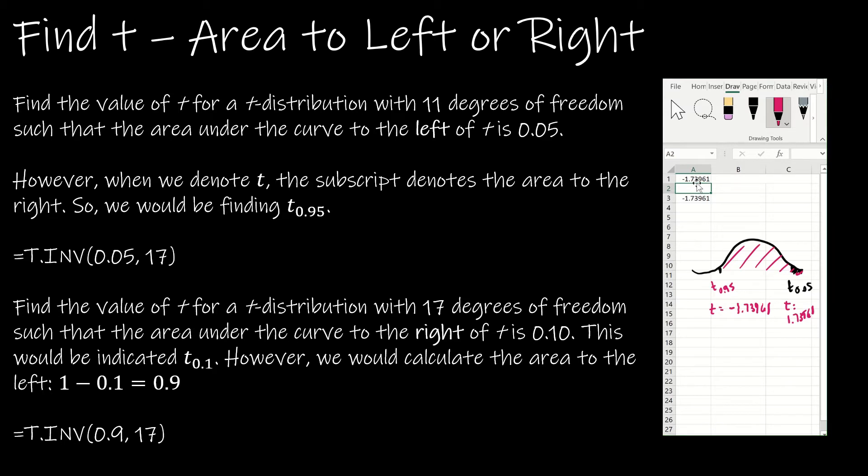If we're looking for the value of a t-distribution with 17 degrees of freedom such that the area under the curve to the right of t is 0.1, that's going to be denoted t sub 0.1.